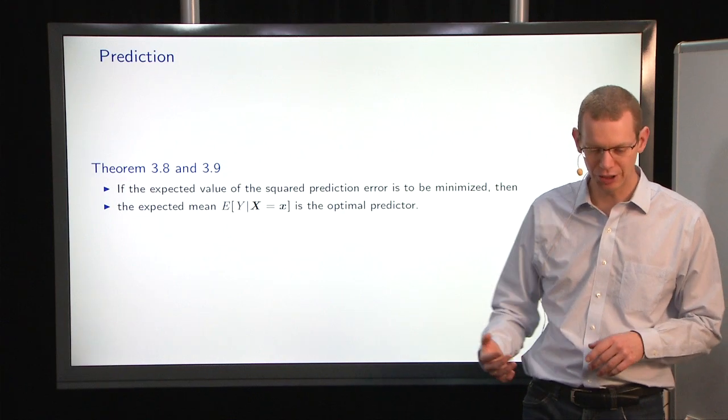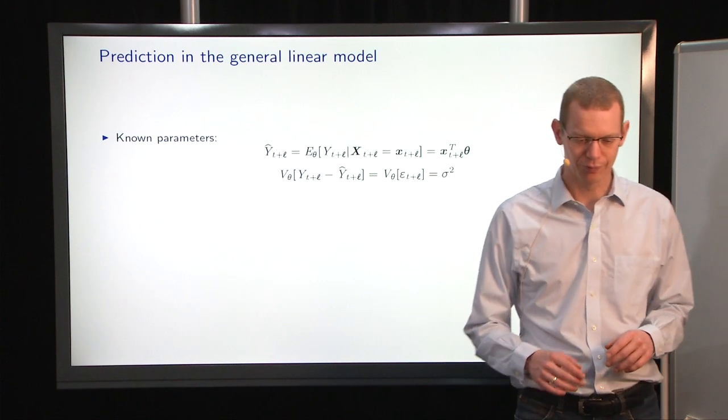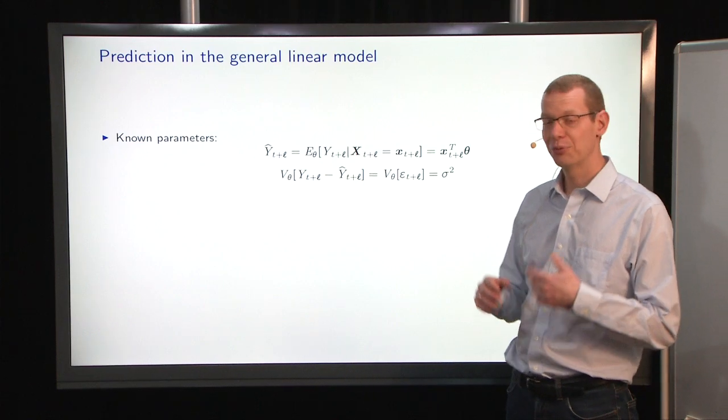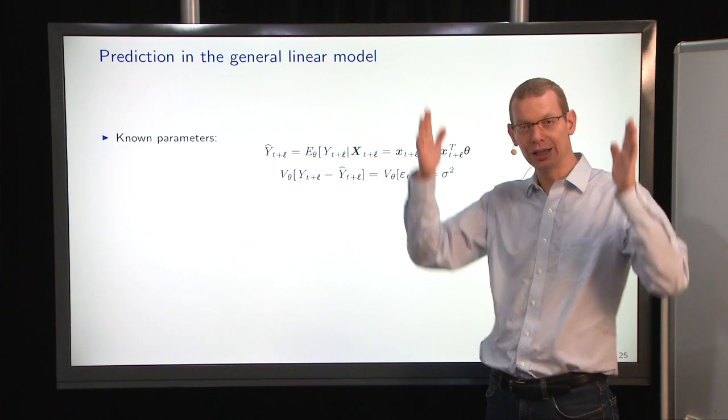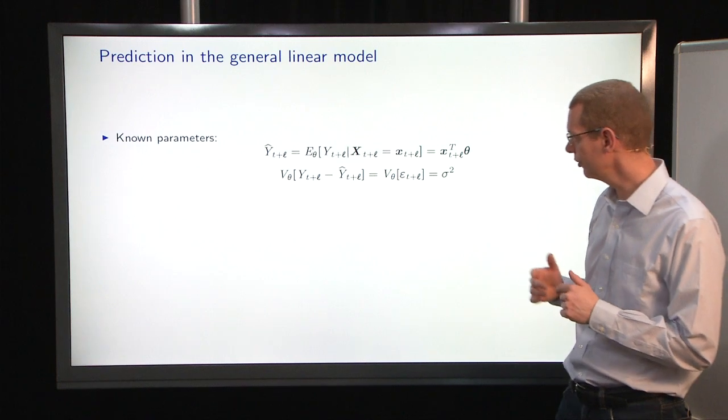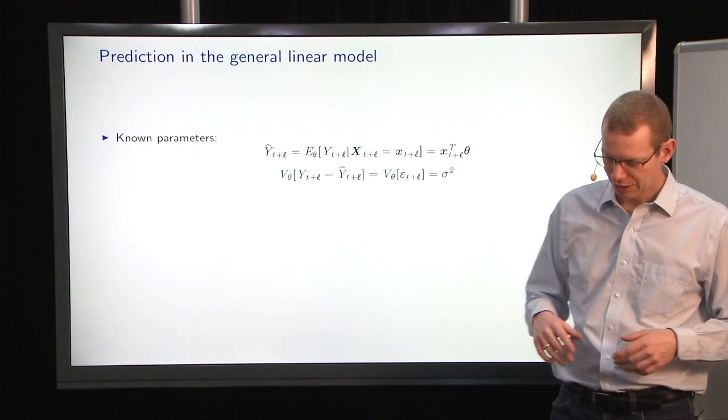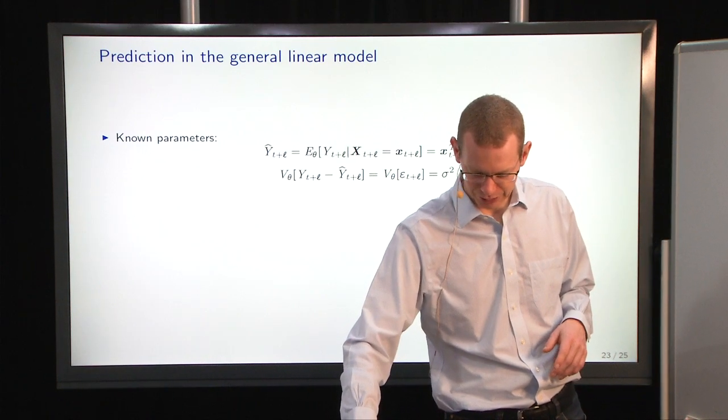Or we call it the conditional expectation is the optimal predictor. In the case where we know the parameters, so the parameters are given somehow with no uncertainty, it's fairly easy, given a model, to make the prediction.